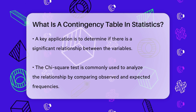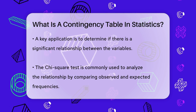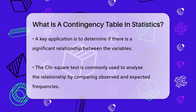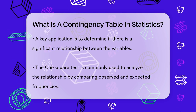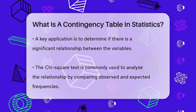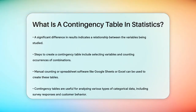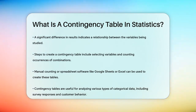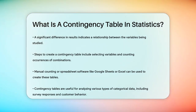Creating a contingency table involves several steps. First, you pick the two survey questions or variables you want to compare. Then you count how many times each combination of these variables occurs. This can be done manually or using spreadsheet software like Google Sheets or Excel, which often have built-in features to help you create these tables.